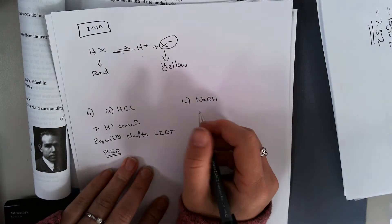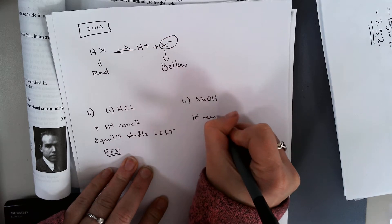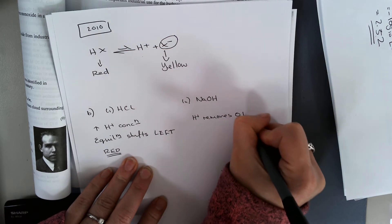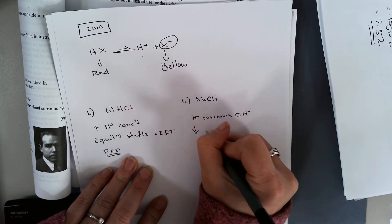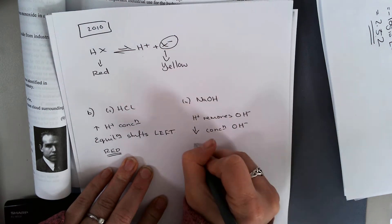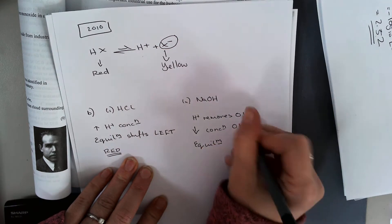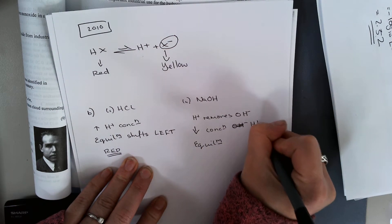Under NaOH, what happens is that H plus removes OH minus ions. I'm decreasing my concentration of OH minus... sorry, decrease concentration of H plus.